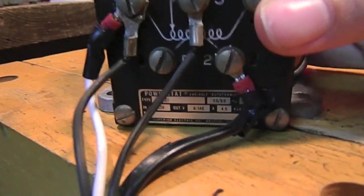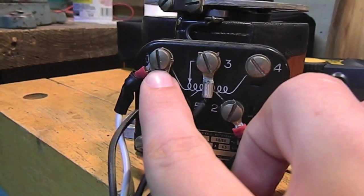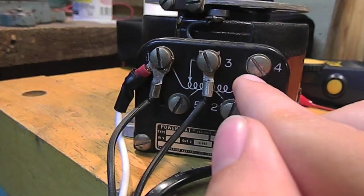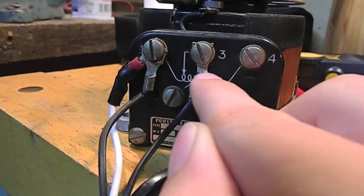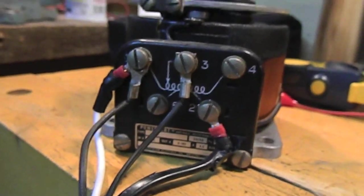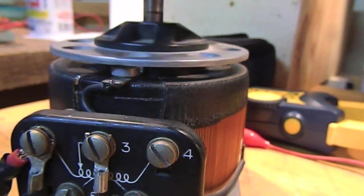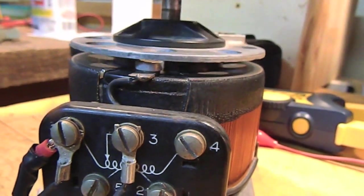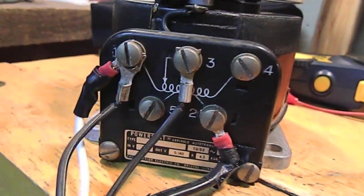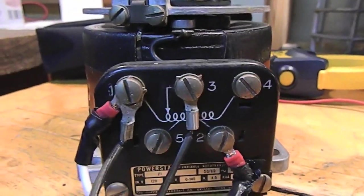Now, if yours doesn't have those, you want to do the same thing. Put your neutral here, but you want to put your hot here. Which, if you look at this little diagram, it will just be at the very end of the toroid. So, you can only get 120 out. You won't have any overwind. And that's where you put your line in.